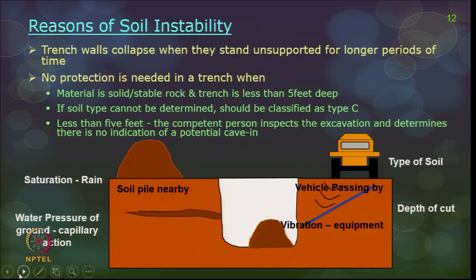If the soil type is not determined or is difficult to identify, it is better to classify it as type C soil — we will discuss type A, B, and C soil shortly. When you have gone just below 5 feet, a competent person should inspect the excavation and determine whether there is any indication of a potential cave-in before you put in safety shields and barriers and continue with excavation.